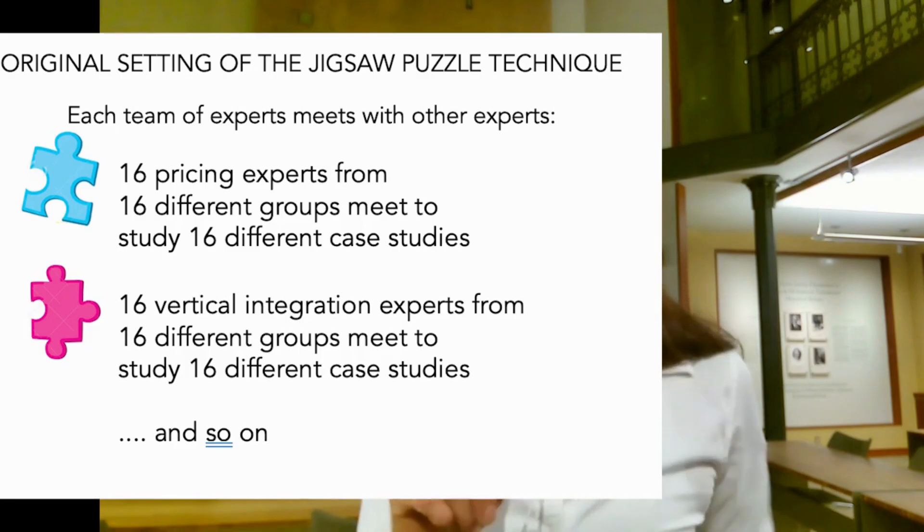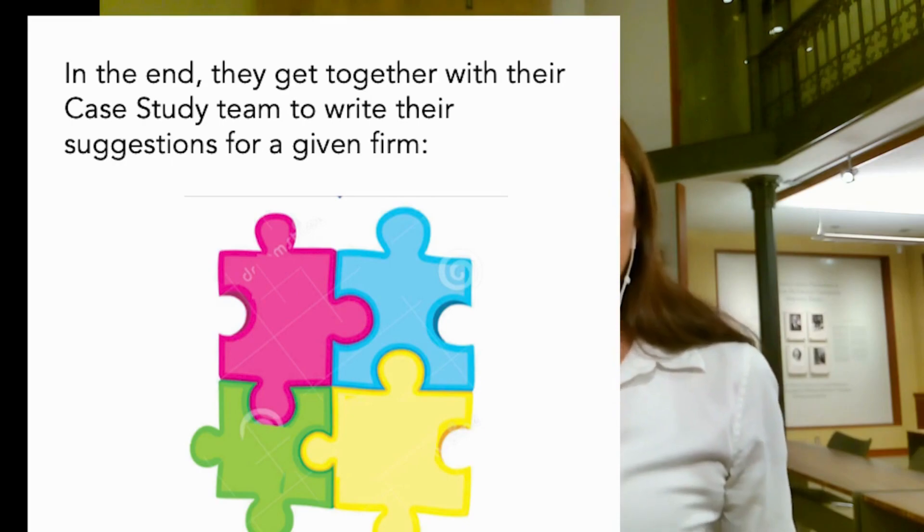The original setting of the jigsaw puzzle is that students meet with their experts — 16 pricing experts meet, then 16 vertical integration experts meet, and then they divide and create with their own team their case study. It didn't work in my case because we have very few interactions, so students started developing a relationship in these teams, and then it was very hard to cut the relationship and start a new one with the team they were supposed to turn in their final case study. So what I did is put the same team from the beginning, and everybody works in the pricing strategy, vertical integration strategy, production strategy, and finally everybody contributes to the net present value calculation.